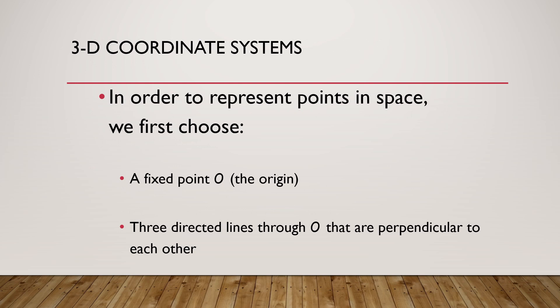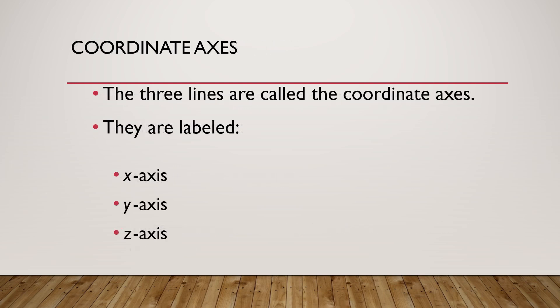In order to represent the points in space, we have to choose an origin O and three directed lines through O that are perpendicular to each other. These three lines are called the coordinate axes. They are labeled as x-axis, y-axis and z-axis.